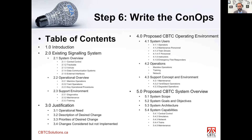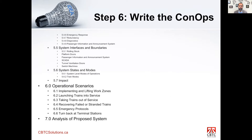Section 5.0, which is the proposed CBTC system overview, was step three, which defines the system capabilities based on the priorities and concerns of the users and operators. Section 5.5 is system interfacing boundaries, which we just talked about earlier — defining all the boundaries and the third-party suppliers that the CBTC system would have to interface with.